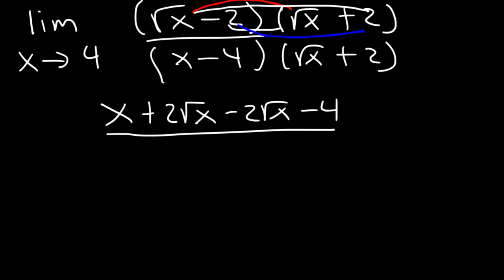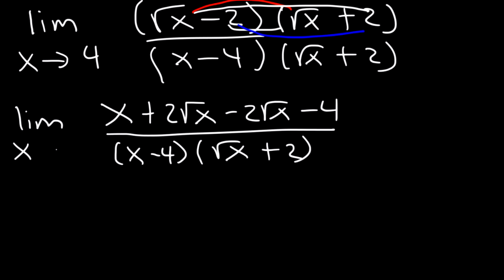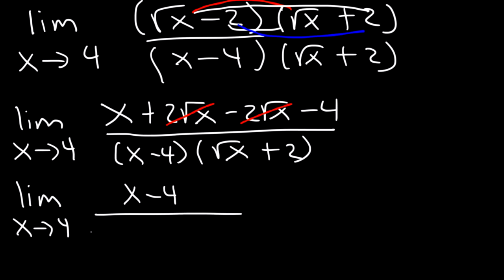Now on the bottom, we're not going to FOIL. We're simply going to rewrite it exactly the way it is. The middle terms, 2 root x and negative 2 root x, cancel. So we're left with the limit as x approaches 4 of x minus 4 divided by x minus 4 times the square root of x plus 2.